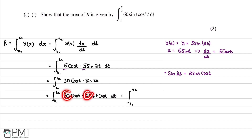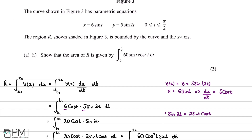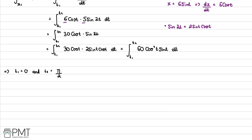Multiplying the constants 30 and 2 together gives 60, and cos(t) × cos(t) gives cos²(t), leaving us with 60 sin(t) cos²(t) — exactly the required form. The limits are determined from the given range: t1 = 0 and t2 = π/2. So the area R equals the integral from 0 to π/2 of 60 sin(t) cos²(t) dt.